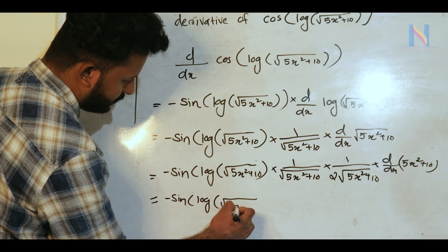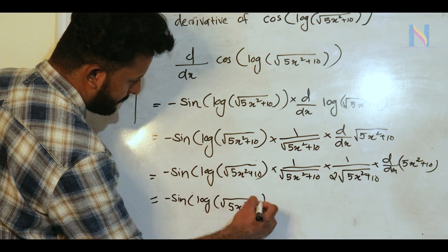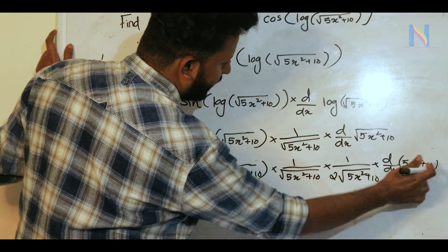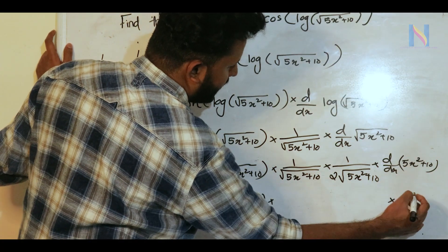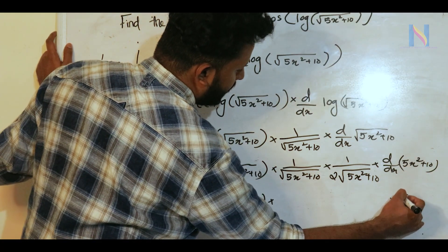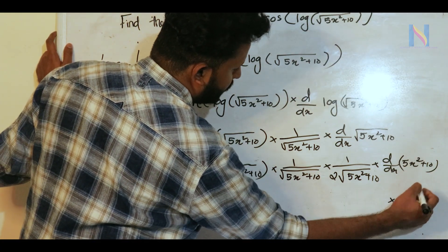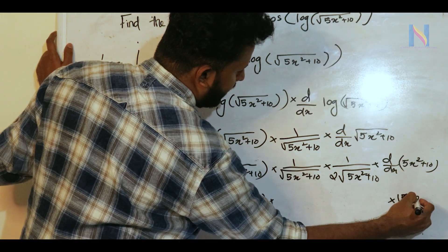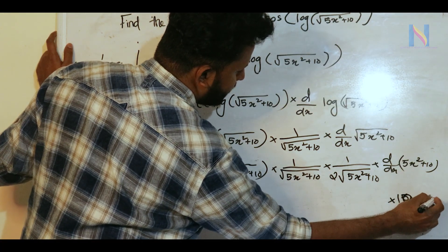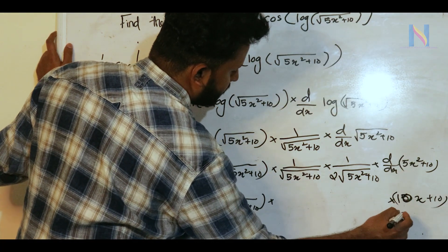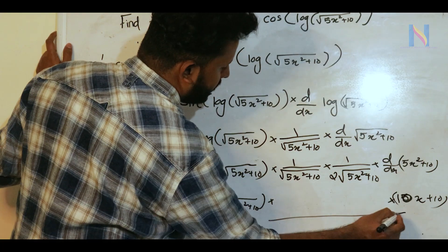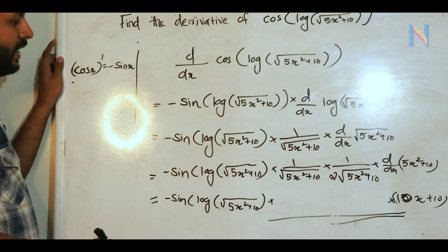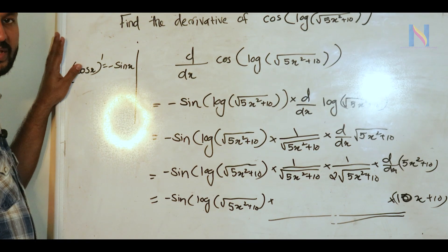Continuing: d/dx of √(5x² + 10) gives the factor, and the derivative of 5x² is 10x. Combining all chain rule factors gives the final answer for the derivative of cos(log(√(5x² + 10))).